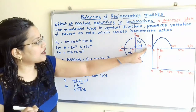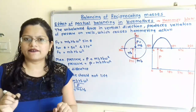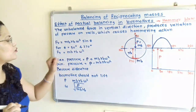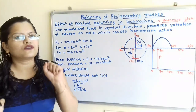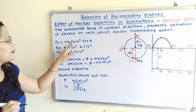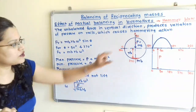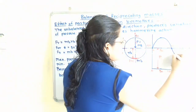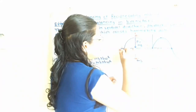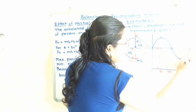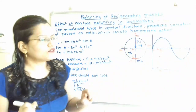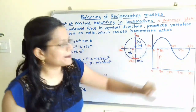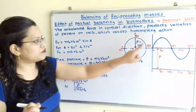As the balancing mass moves to 270°, sin(270) gives a magnitude of MbRb·ω². This same magnitude applies at 270°, and again at 360° (or 0°) it becomes 0. So the magnitudes are MbRb·ω² at both 90° and 270°, forming a sinusoidal variation.